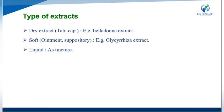Now we will see the types of extract. There are mainly three types: first is dry, second is soft, and third is liquid. For dry extracts, examples include tablet or capsule forms, such as belladonna extract, which is available as a dry extract.